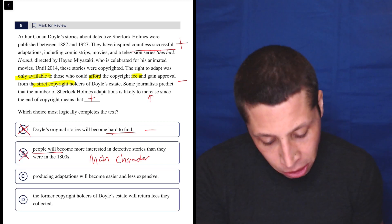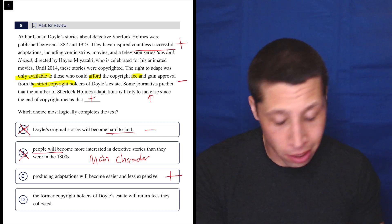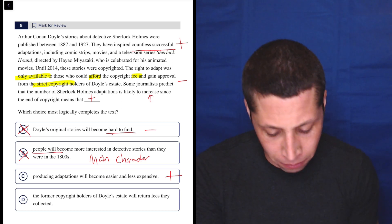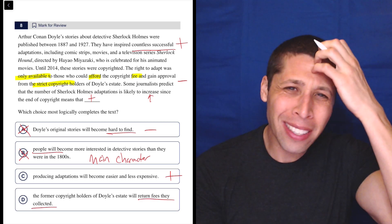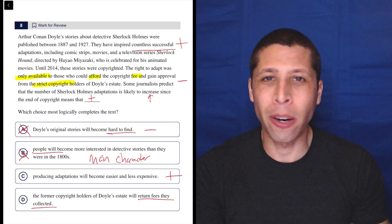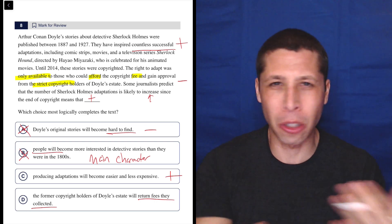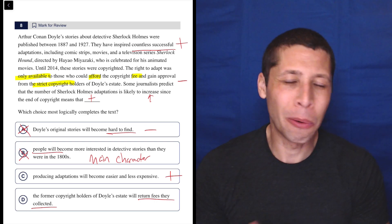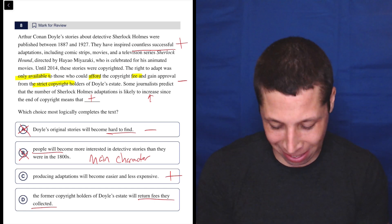Choice C: producing adaptations become easier and less expensive. That sounds pretty good, so that's probably it. And D: the former copyright holders of Doyle's estate will return fees they collected. What? Why would they do that? We never even talked about those people. They're going to return fees, just give away money? We need to back that up with evidence, and we don't have any.